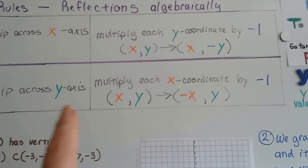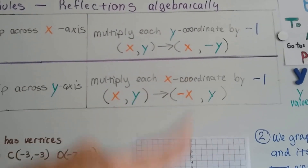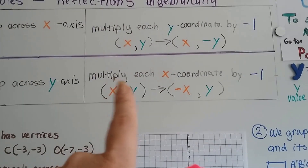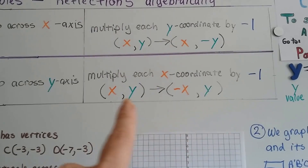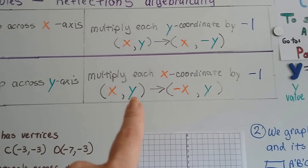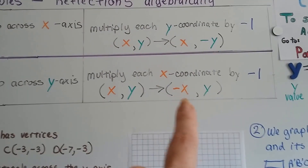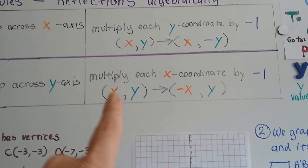When we flip across the y-axis — that up and down y-axis — we multiply each x-coordinate by negative 1. So the coordinates will end up becoming (-x, y), because the x was multiplied by negative 1.